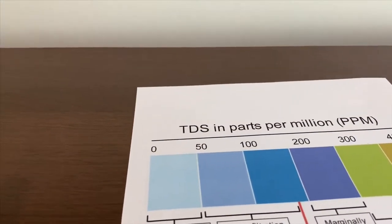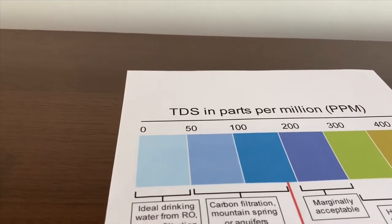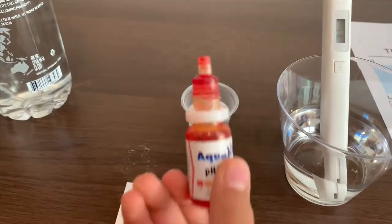That is cotton filter, mountain spring, or aqua first water. Now let's check the pH level.